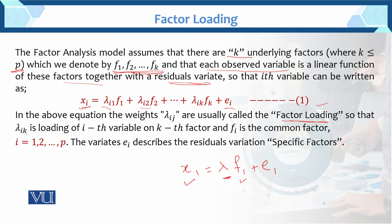Lambda IK is the loading of the Ith variable on the Kth factor. FI here is the common factor, and the variation I goes from 1, 2, up to P. So we have P variables. The variates EI describe the residual variation — these are the specific factors. So in factor analysis: lambda stands for factor loadings, F stands for common factor, and EI stands for specific factors. This is the model.